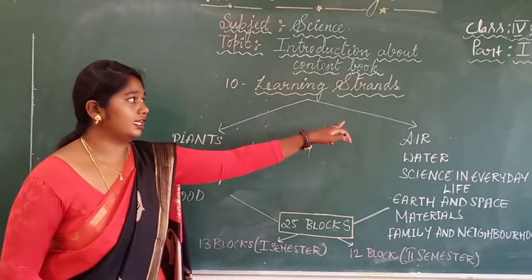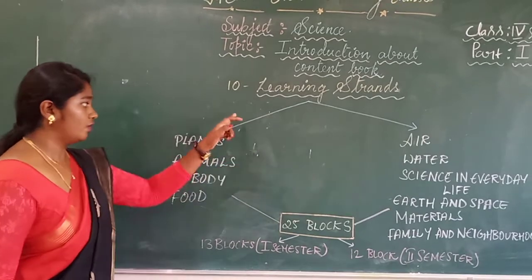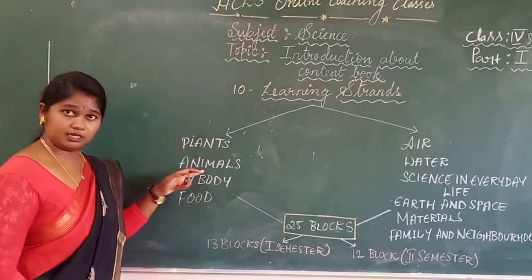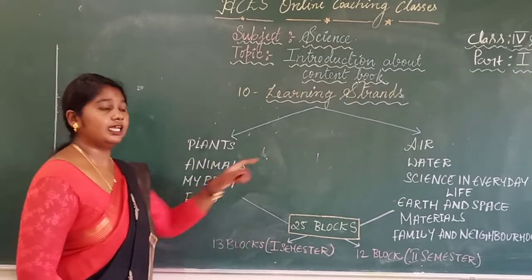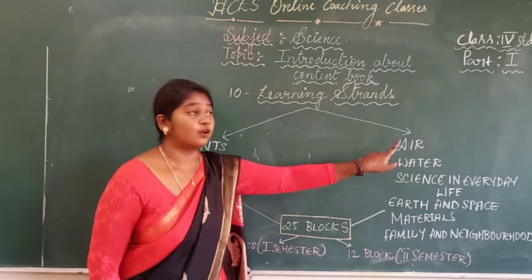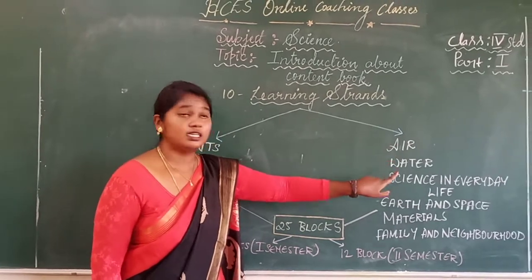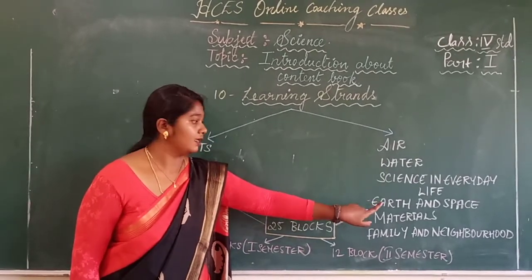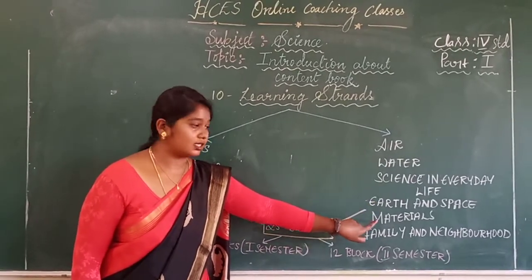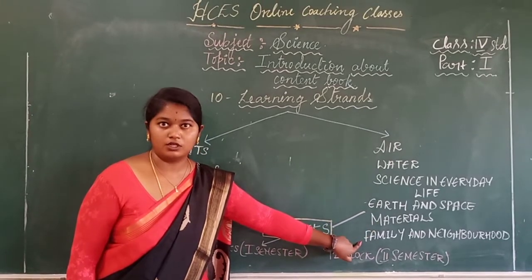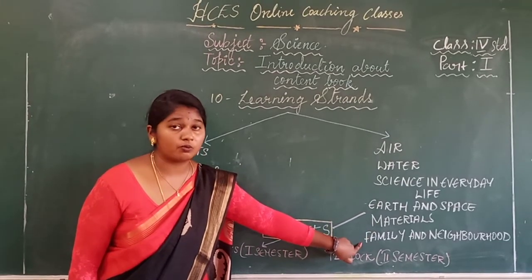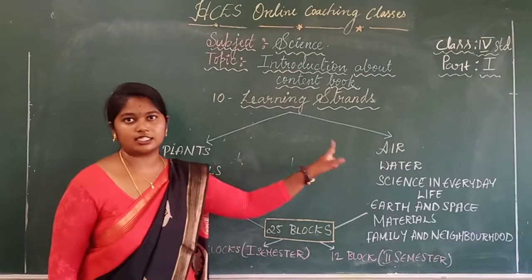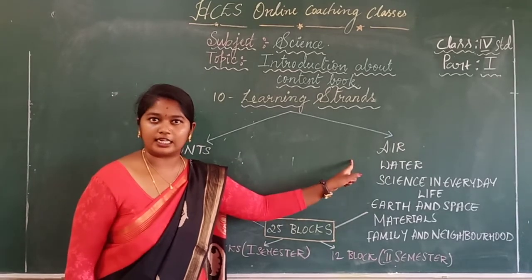Under these 10 learning strengths, we have: Plants, Animals, My Body, Food, Air, Water, Science in Everyday Life, Earth and Space, Materials, and Family and Neighbourhood. Overall, there are 10 learning strengths in our content.